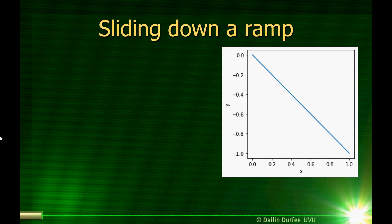Here's one problem. Imagine we have a ramp, and we have something sliding down the ramp, and we want to know what the velocity of the object will be when it gets to the bottom of the ramp. If my ramp is just a constant slope, then I can write an equation that describes y as a function of x for my ramp. And then, what will the velocity be at any given y or any given value of x? Well, this is a constant acceleration problem, so the velocity is just the initial velocity plus a times t.